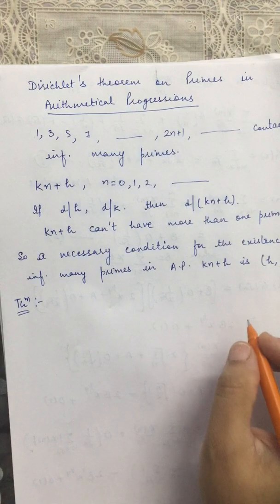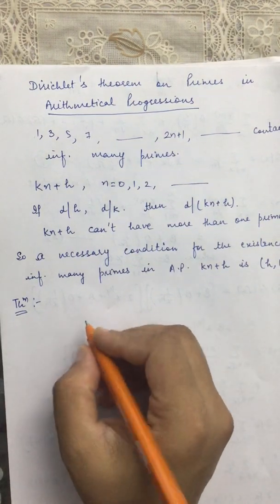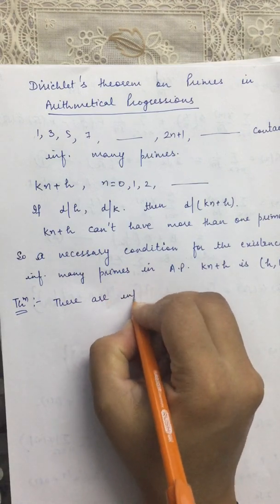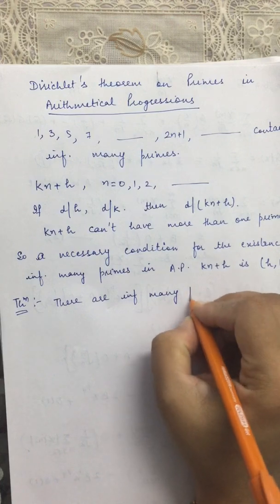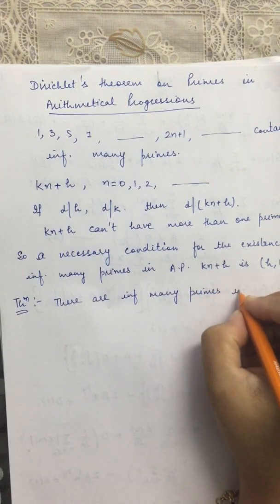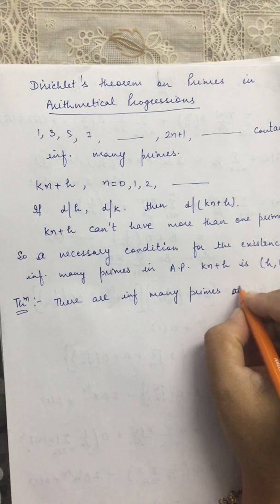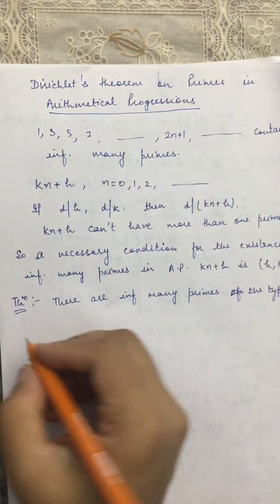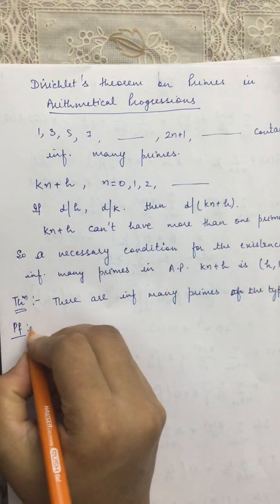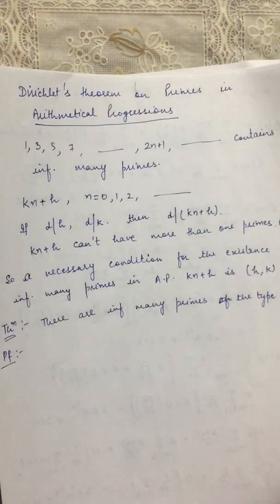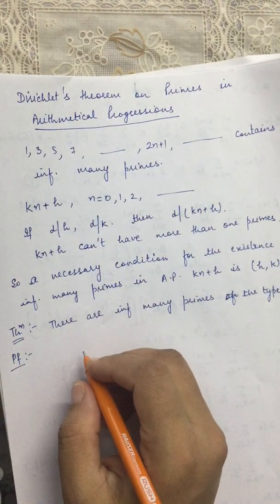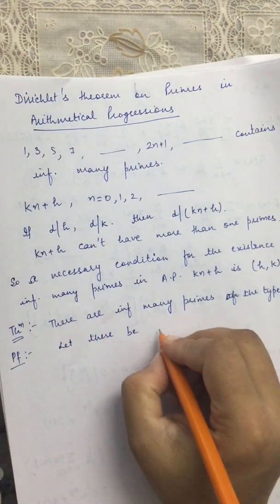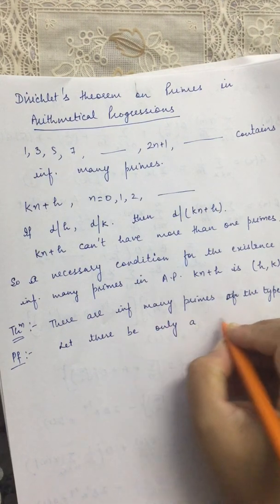So firstly we prove some particular cases of Dirichlet's theorem. Let us prove firstly that there are infinitely many primes of the type 4n−1 and 4n+1. There are infinitely many primes of the type 4n−1, meaning there are infinitely many primes in the arithmetic progression 4n−1. We will prove this by contradiction — assume there exists only a finite number of such primes.